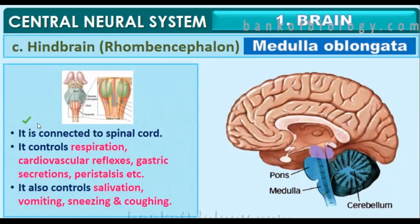The medulla oblongata is the last part of the brain and is connected to the spinal cord, acting as an interconnection between the spinal cord and the brain. It controls respiration, cardiovascular reflexes, gastric secretions, peristalsis, salivation, vomiting, sneezing, and coughing.